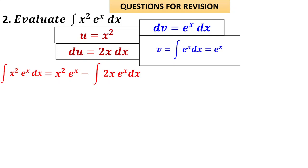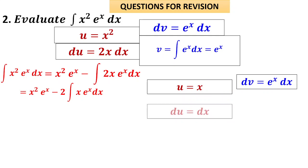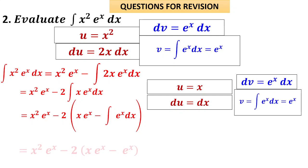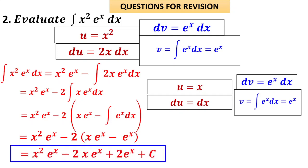Bringing 2 out, we get 2 times integral of x·eˣ dx. We've already solved this — apply integration by parts again with u = x, dv = eˣ dx, du = dx, v = eˣ. This gives x·eˣ − integral of eˣ dx = x·eˣ − eˣ. The final answer becomes x²·eˣ − 2(x·eˣ − eˣ) plus c.